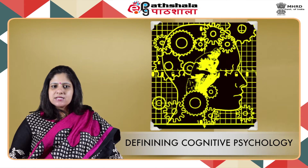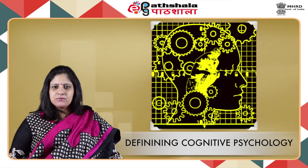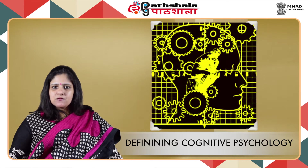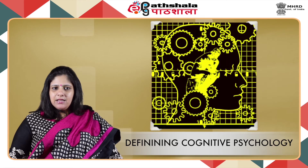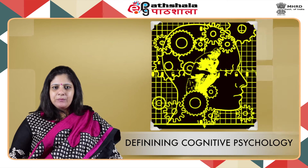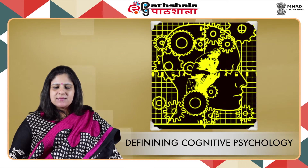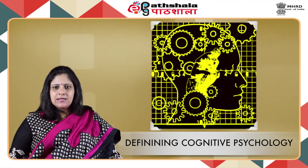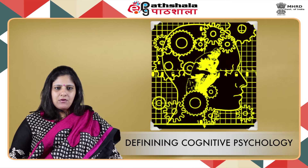Cognitive psychologists measure behaviours in the laboratory in order to reach conclusions about covert mental processes. The experimental method is the heart of cognitive psychology. The main goal of cognitive psychology has always been to explain how humans transform input into thoughts and actions through the complex and often mysterious processes of cognition. Thus, human psychology may not be possible to understand without focusing on cognitive psychology.